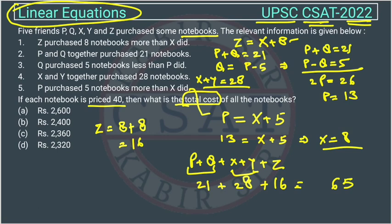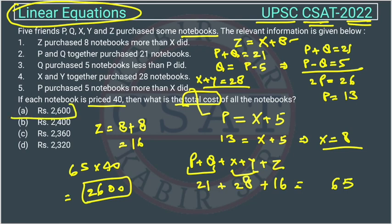So this is 65 and each notebook cost 40 rupees. So we will multiply this 65 into 40. So this will be how much? 4, 5s are 20. 4, 6s are 24 and 2, 26. So the answer is 2600. So option A is the right answer. So this is the answer.